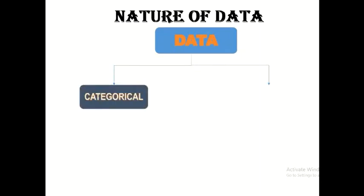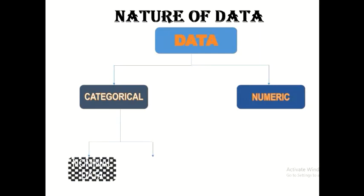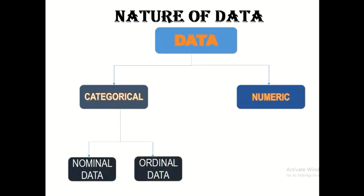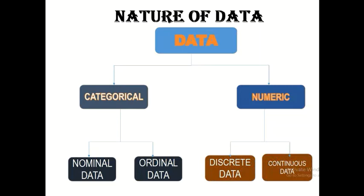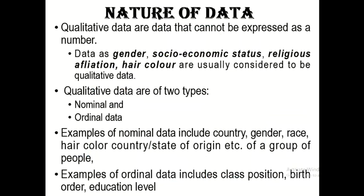Data is divided into two categories: the first is categorical data, also called qualitative data, and the second is numerical data, also called quantitative data. Categorical data is further divided into nominal data and ordinal data, while numeric data is also further divided into discrete data and continuous data.